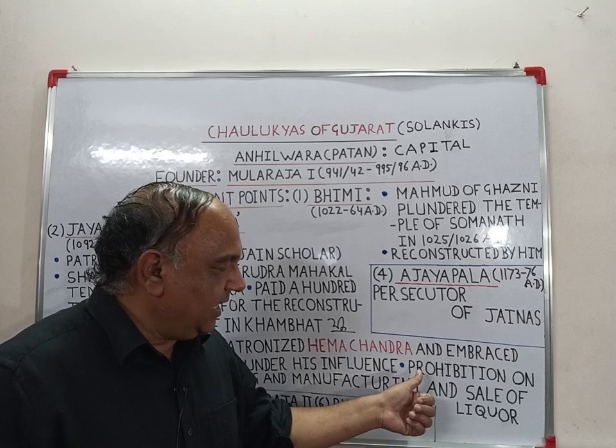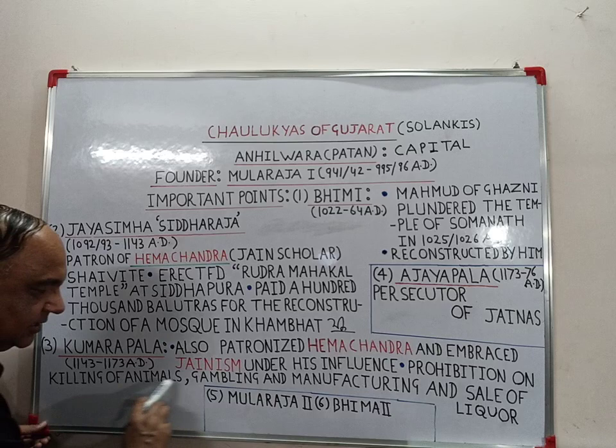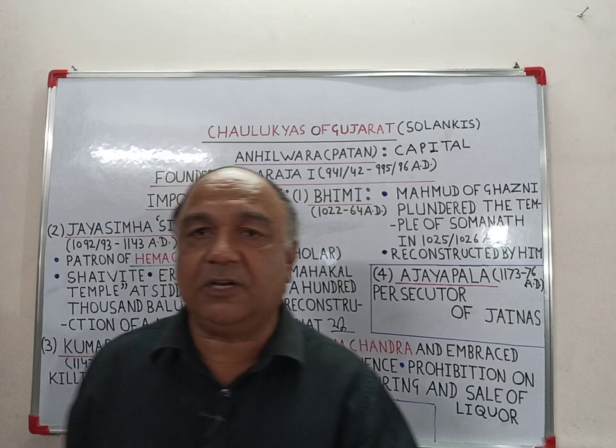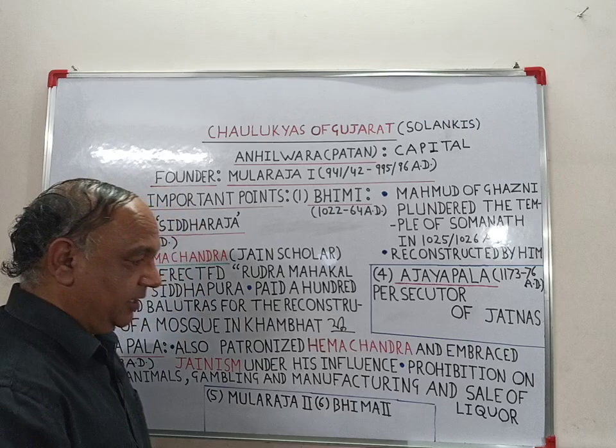Kumar Pali declared prohibition on the killing of animals, gambling, and the manufacturing and sale of liquor throughout his empire.